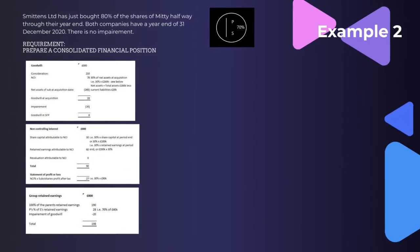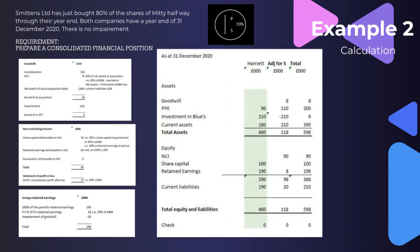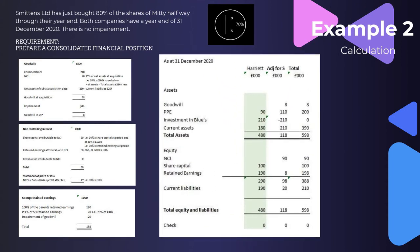Finally, we put together the consolidated statement of financial position. We place all of Harriet's figures in the first column, then adjust for the subsidiary: add goodwill of 8k, add 100% of Blue's assets — PPE of 110k and current assets of 210k — remove the investment line of 210k, add NCI of 90k, adjust retained earnings by 8k (since we already have 190k and need to reach 198k), and add Blue's current liabilities of 20k. Overall, total assets of 598k equals total equity and liabilities of 598k.